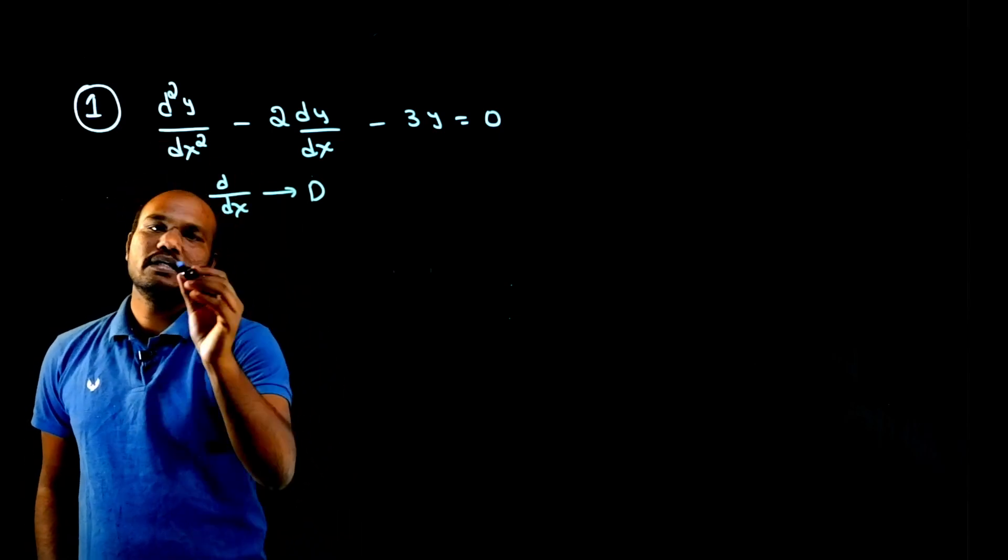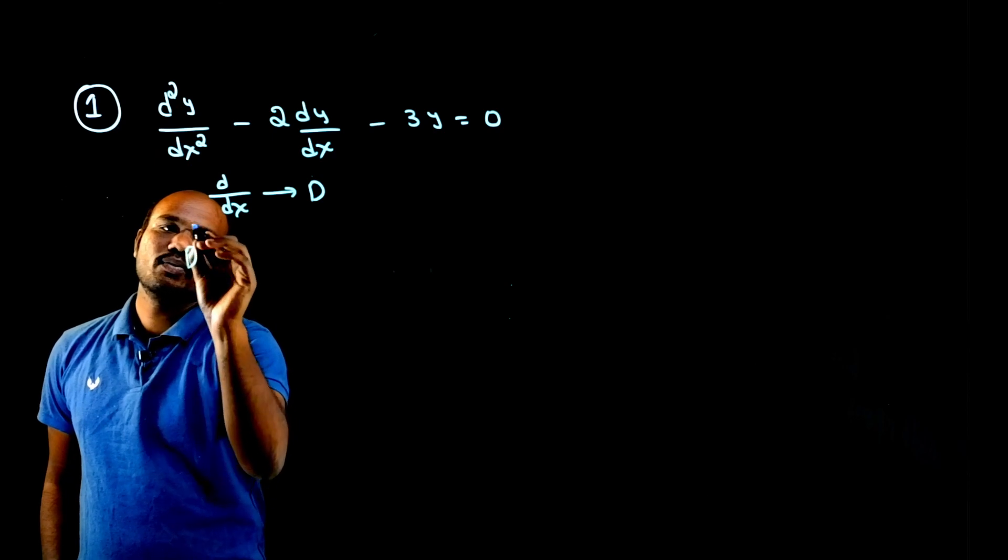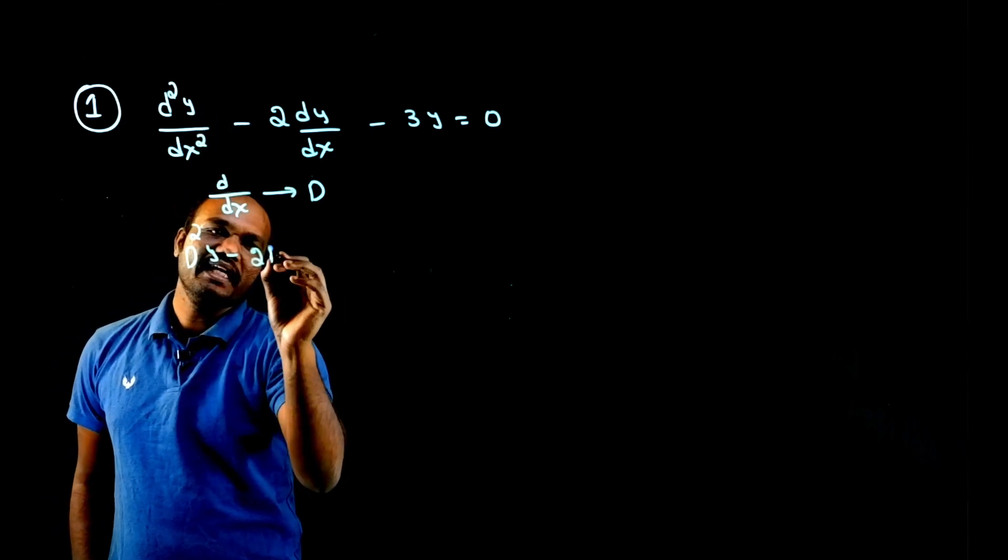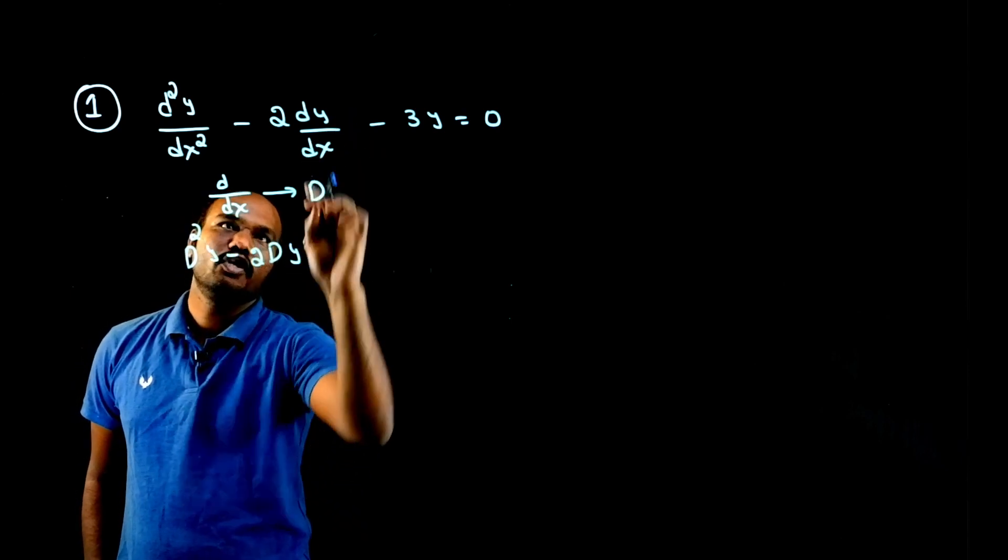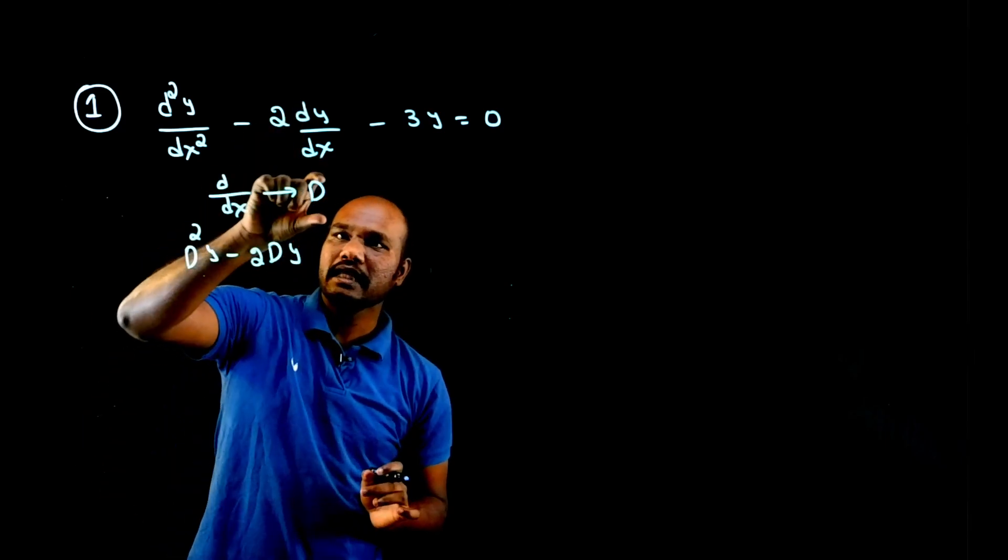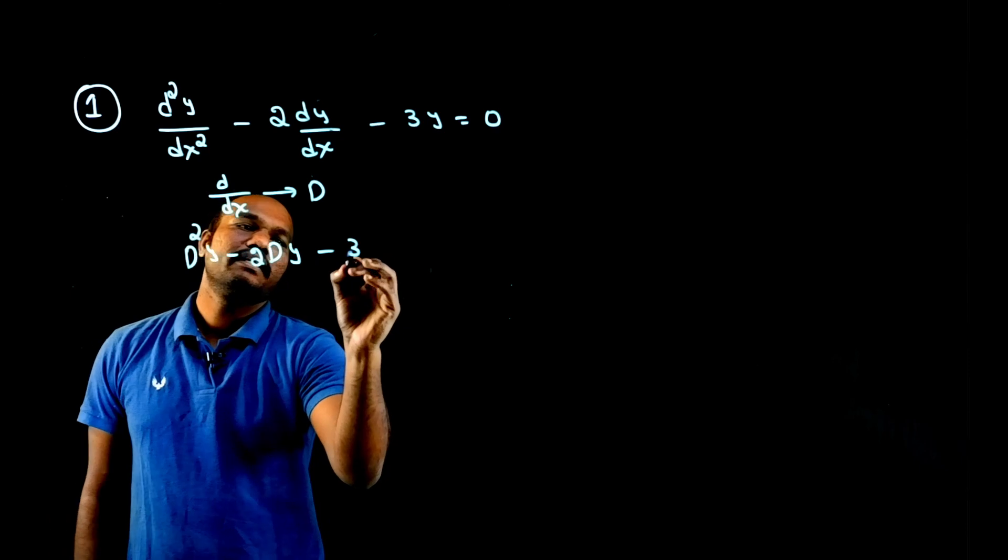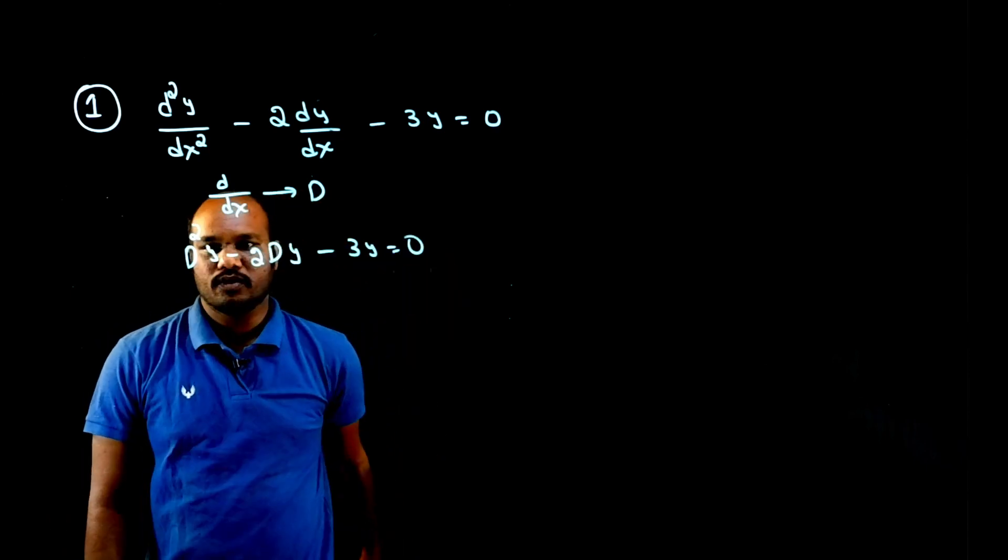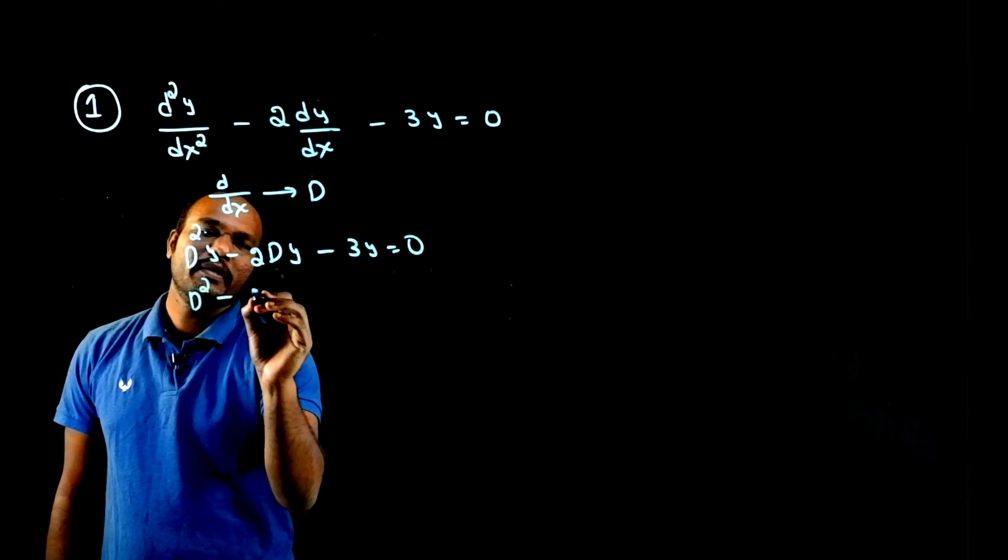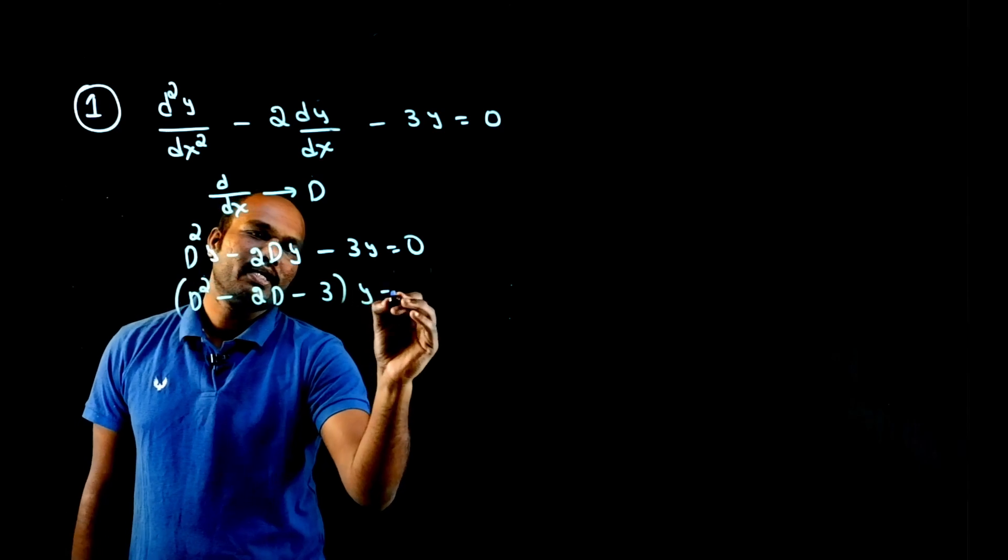So if I just substitute here, d square by dx square becomes d square. So I'll write d square y minus 2 dy, because d by dx is capital D, so this becomes dy minus 3y equal to 0. Now everywhere the common term will always be y, so let's take d square minus 2d minus 3 times y equal to 0.